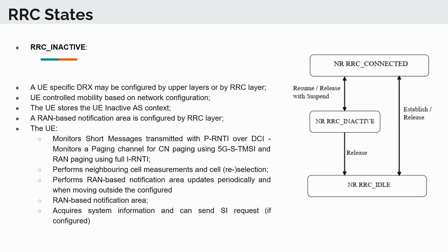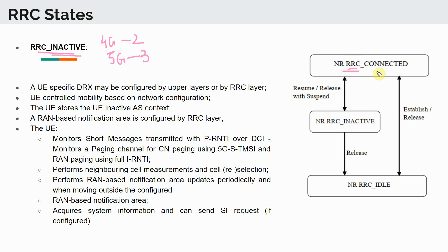In this section, we will talk about the RRC inactive state. The RRC inactive state is a new state that is introduced in 5G. In 4G, we only had two states. In 5G, we have three RRC states: RRC connected, RRC inactive, and RRC idle.